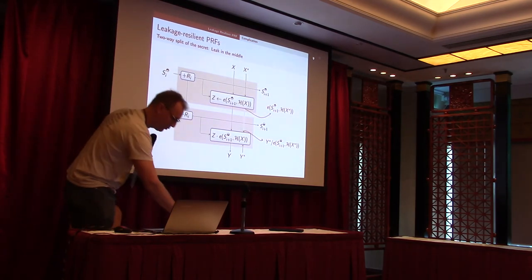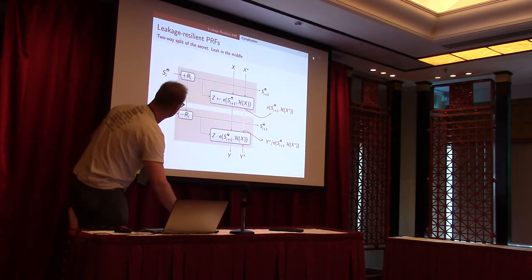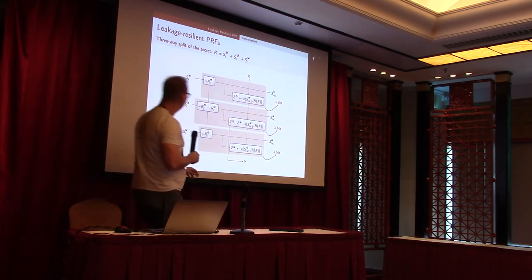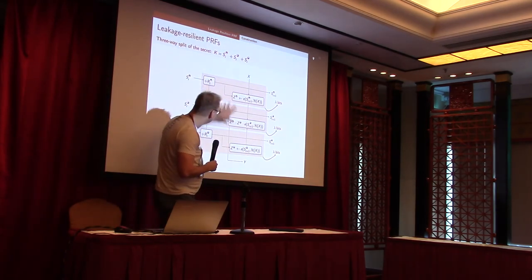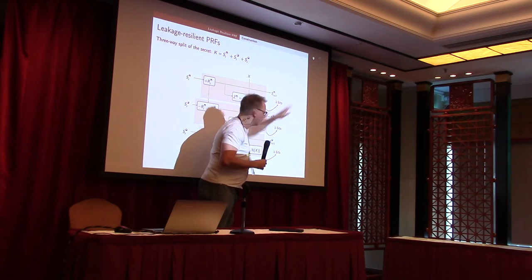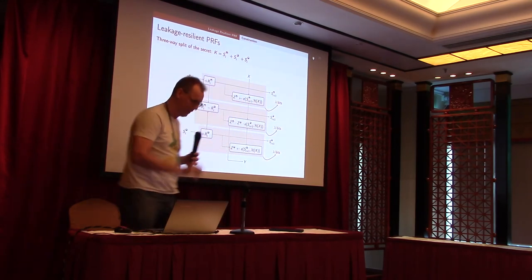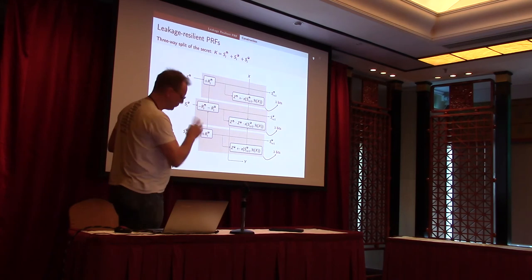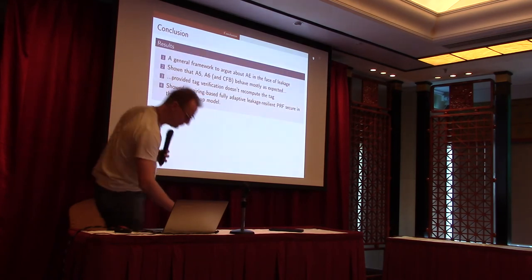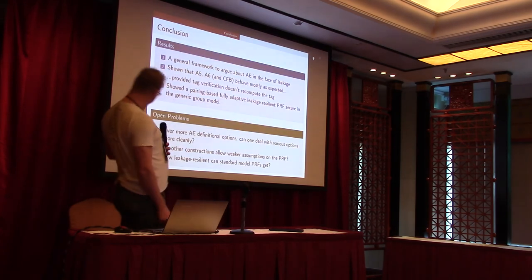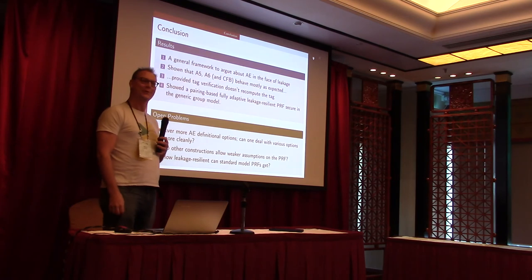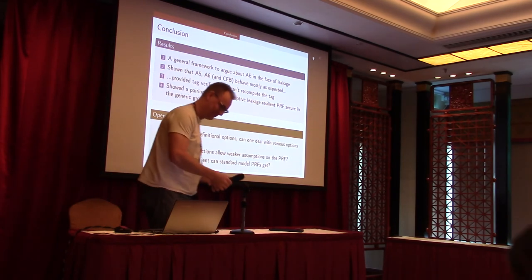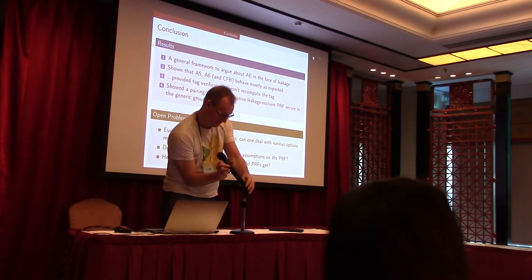The solution to this problem is to use three shares instead of two. You can then leak lambda bits, which should be about half of the group size. Thank you for your attention.